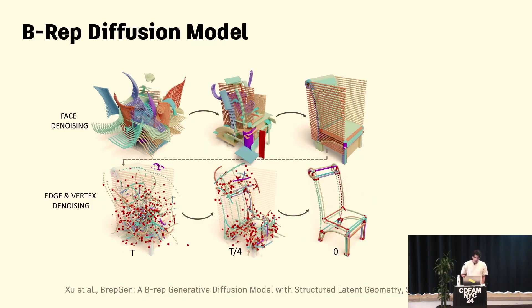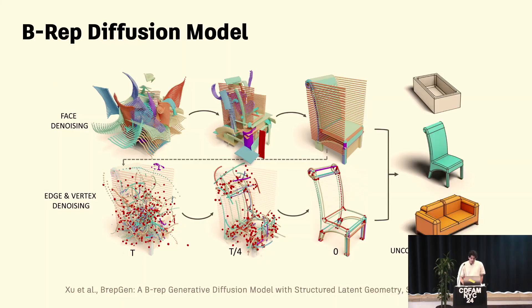For B-reps the process looks much the same. We have a couple of levels of diffusion: at the face level we sample points on the B-rep surfaces, mess them up, and learn how to remove that noise to recover the underlying shape. Likewise for edges — we sample points on the edges, mess them up, then remove that noise. At the end we can stitch everything together to create solid models.